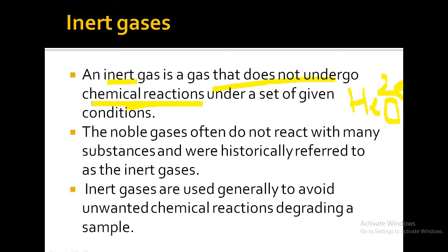An inert gas is a gas that does not undergo any chemical reaction, because its octet is filled. They don't require any electrons, they don't need to give any electrons, and they have no extra electrons in the outermost shell. They are also known as noble gases because they do not react with many substances — historically they were referred to as inert gases.